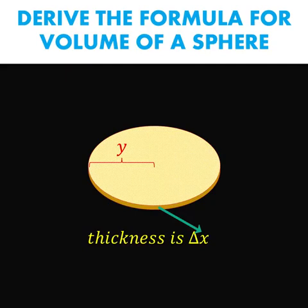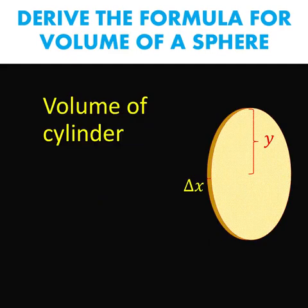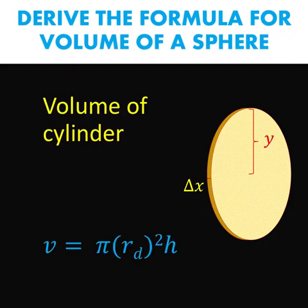So what is the volume of this disk? Our disk is a cylinder. The base is circular and the height is denoted by this thickness which is delta x. And we know that the formula to compute for the volume of a cylinder is the area of the base times the height. In our case, our base is a circle. So the area of the circle is pi radius squared where our r is the radius of the disk denoted by r subscript d.